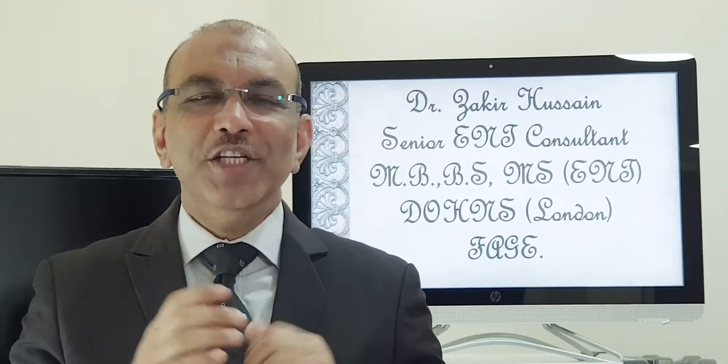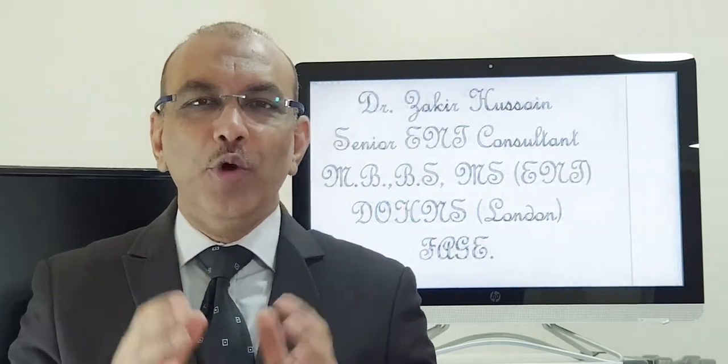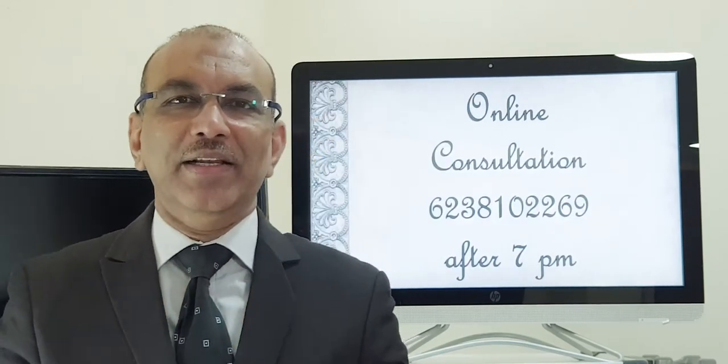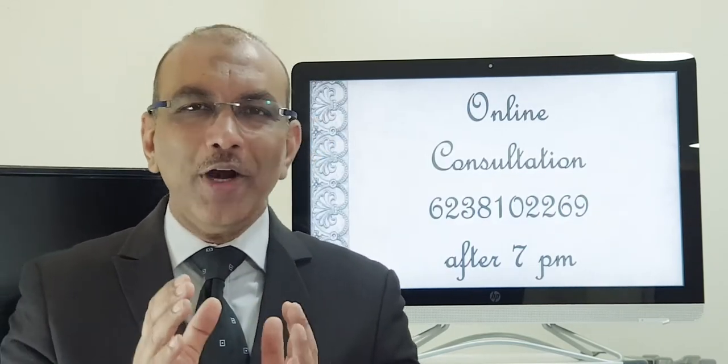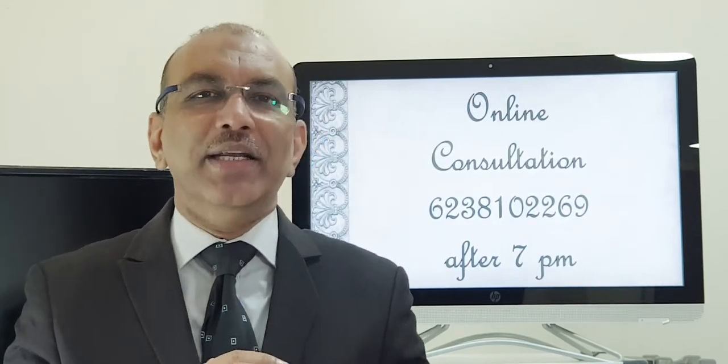Hello everyone. In this video I am going to tell you about geographic tongue. Geographic tongue means in the tongue there is a geographic or map-like pattern which is seen. What happens in this condition is that the filiform papillae which covers the tongue is lost.